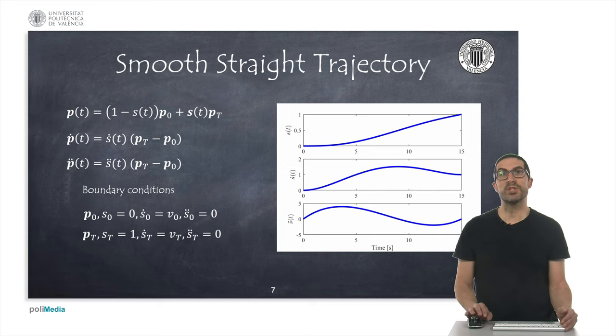In the example shown here, the initial velocity is zero, while the final velocity is given by the value VT. This is obviously arbitrary and can be modified.